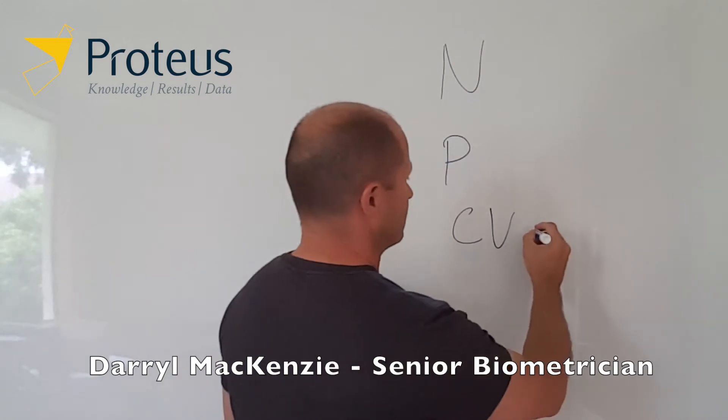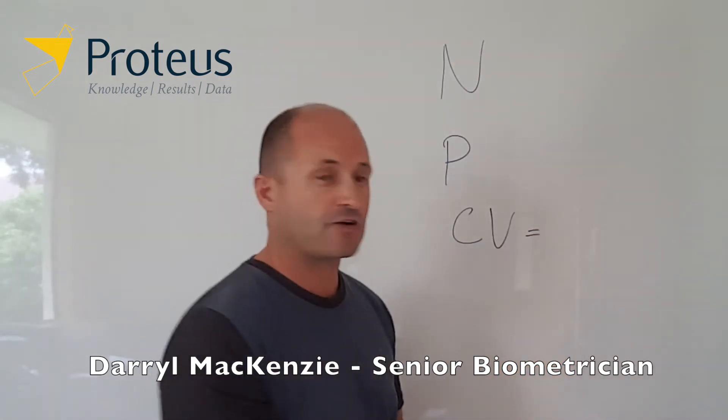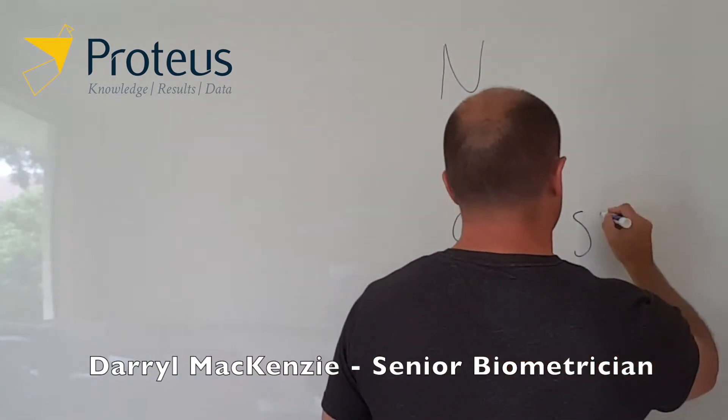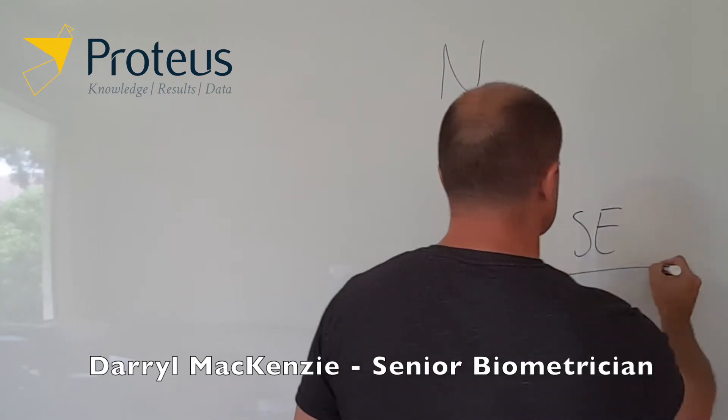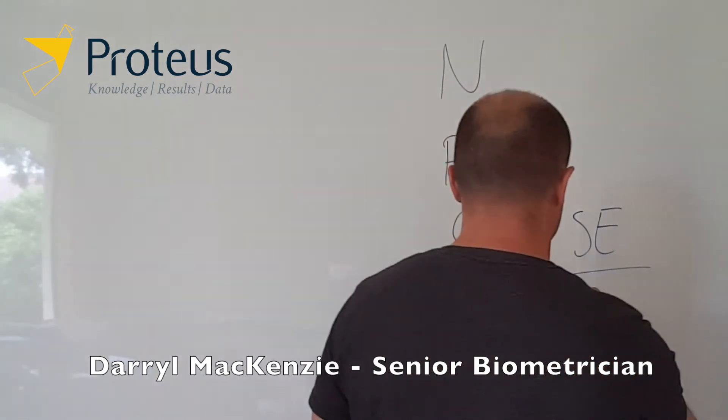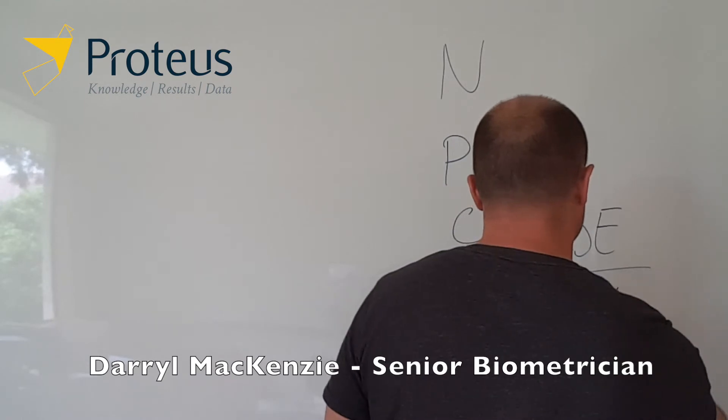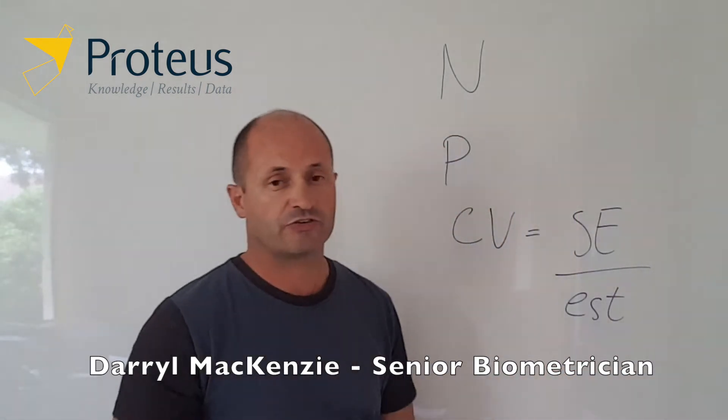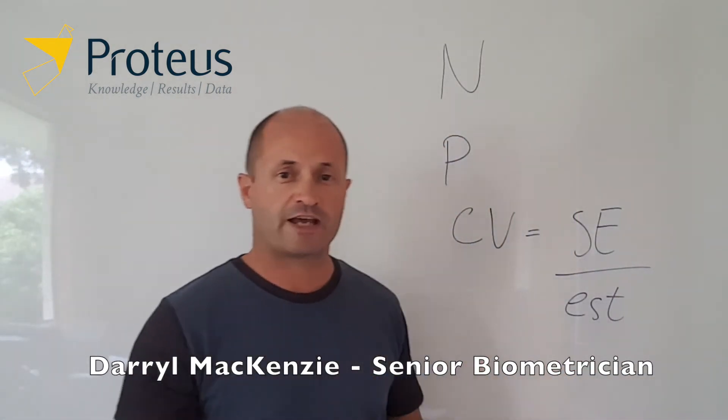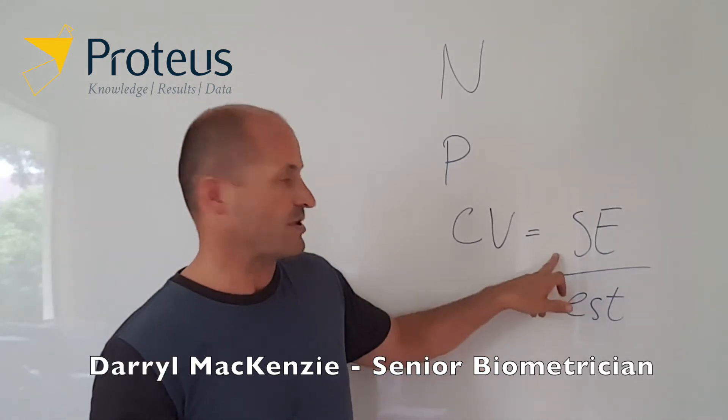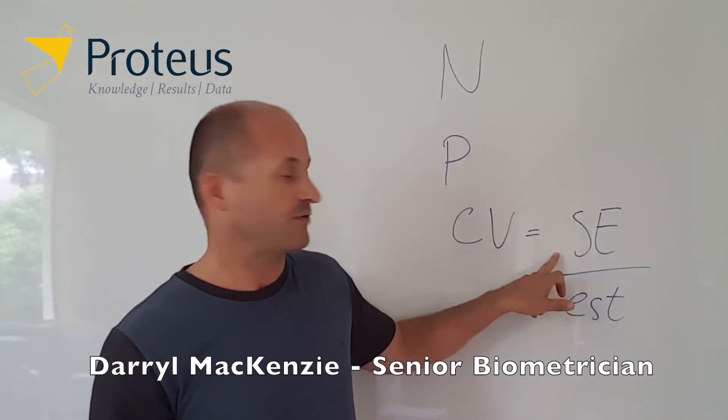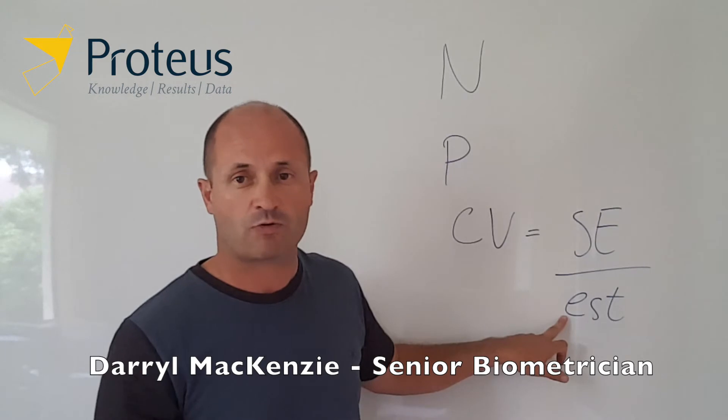The way it's calculated is the standard error of our quantity of interest divided by the estimate for that as well. So basically it's looking at relatively how much uncertainty do we have about some estimate or some quantity of interest.